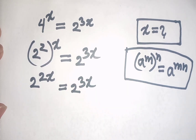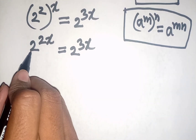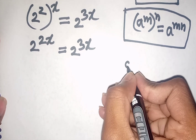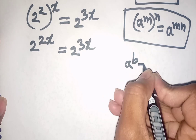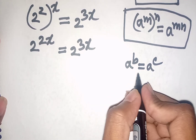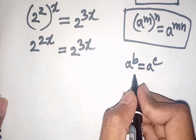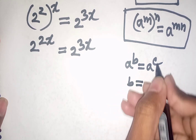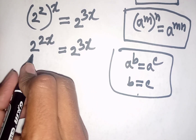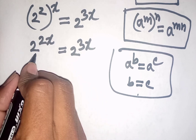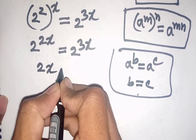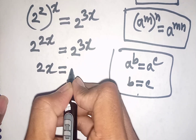Now we see the base 2 is the same on both sides. According to the exponential rule, if a power b is equal to a power c, then since the bases are equal, the bases cancel and b equals c. So 2x is equal to 3x.